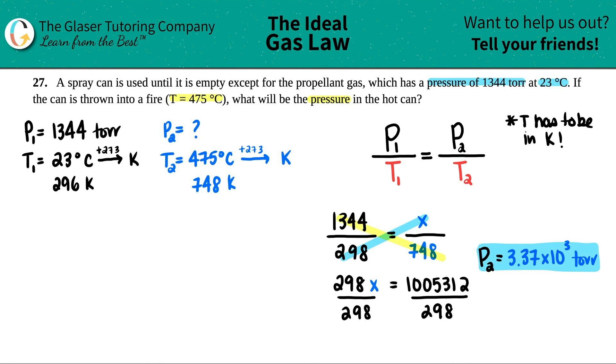And this kind of makes sense. Remember P and T are direct relationships. So if the temperature goes up, that means that the pressure has to go up. And this number is way higher than the pressure that it started with. So hopefully this makes sense.